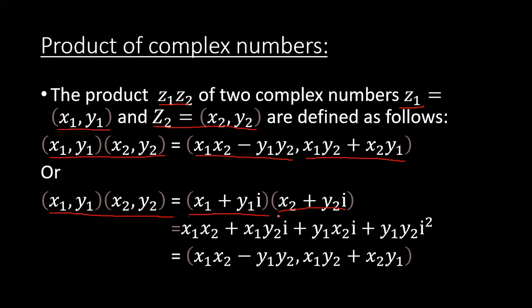We have to multiply x1 with x2, which becomes x1x2, and x1 with y2i becomes x1y2i. Similarly, we multiply y1i with x2, which becomes y1x2i, and y1i with y2i becomes y1y2i². Here i² equals -1.